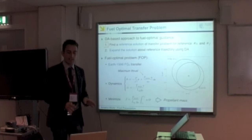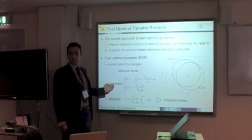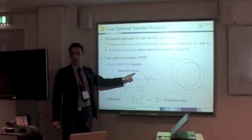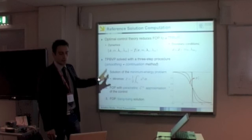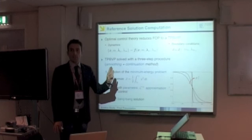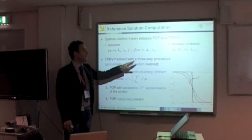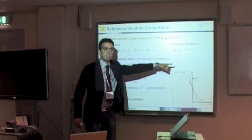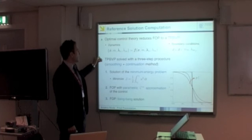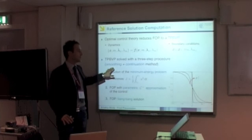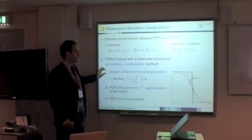We solved the low-thrust fuel-optimal transfer problem, focused on the transfer to the asteroid 1996 FG3. The dynamics used is essentially Kepler's dynamics plus the control term. We have a maximum thrust constraint and the mass equation. We solved this problem by minimizing the propellant mass. Optimal control theory reduces the fuel-optimal problem to an equivalent two-point boundary value problem by introducing the co-state variables into the dynamics and adding boundary conditions on the initial state, the final state, the initial mass, and the transversality condition on the final mass co-state. Solving this two-point boundary value problem is quite difficult because the solution is in general discontinuous — it's a bang-bang solution. So we developed a three-step procedure, essentially a smoothing technique plus a continuation on a suitable parameter.